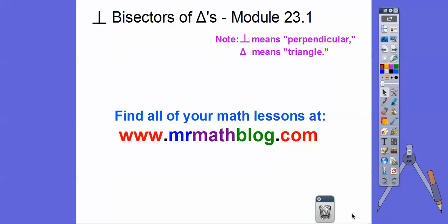Hey folks, this lesson is Perpendicular Bisectors of Triangles — Module 23 in our book. We're going to be needing a compass for this lesson, so if you don't have one, you can just watch. Remember, an upside-down capital T means perpendicular. And instead of writing the word triangle, I'm just going to put a little triangle symbol. So this says perpendicular bisectors — bisectors means it's in the middle, it bisects, it cuts it in half. Don't forget all your lessons can be found at MrMathBlog.com.